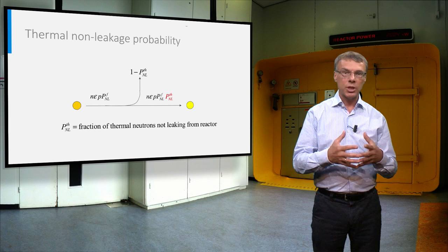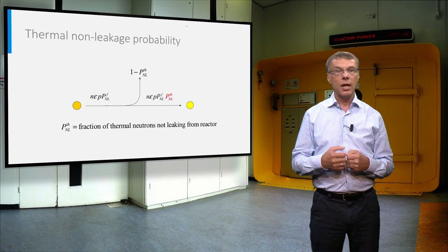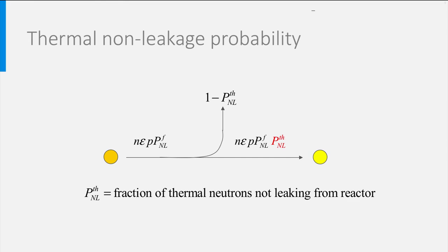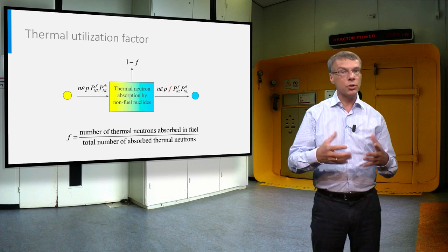The thermal neutrons can disappear from the reactor core either by leakage or by absorption. The fraction that survives leakage is called the thermal non-leakage probability, indicated with the red capital P in the formula. And the remainder of the neutrons will be absorbed.